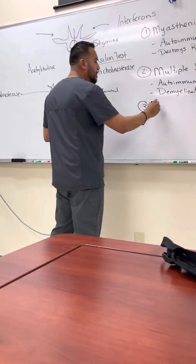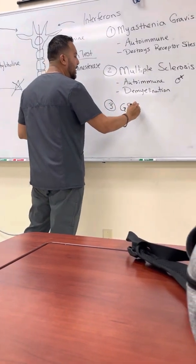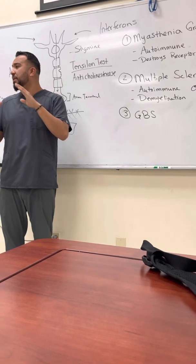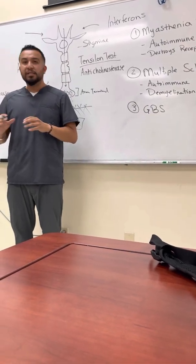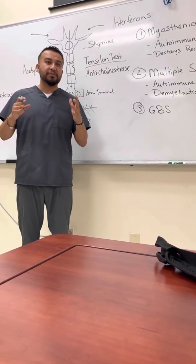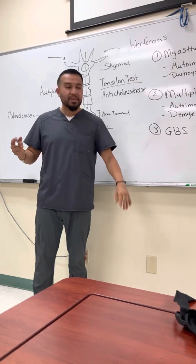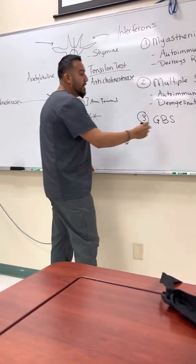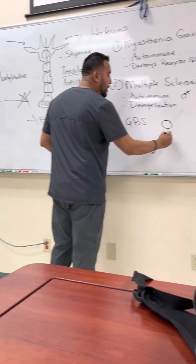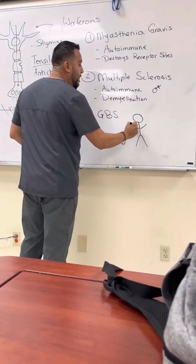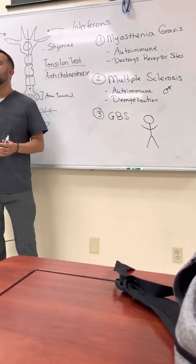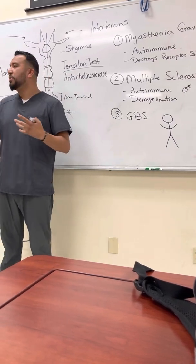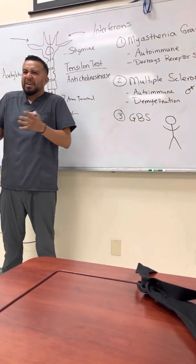The third condition I want to talk about is called Guillain-Barré syndrome, or GBS. This is also demyelination, but it happens in an acute fashion. It's not progressive to the point where you'll continue to have it — if you survive it, you get better. Imagine a patient whose immune system becomes activated and then starts behaving abnormally.